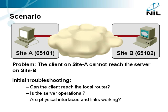The scenario we'll troubleshoot is well known to any networking engineer. A client on site A having AS number 65101 cannot reach the server on site B having BGP AS number 65102. We're assuming you already performed initial troubleshooting to verify that the client can reach the local router, that clients from some other site can reach the server so it's not a server problem, and that the LAN and WAN links connected to routers on both sites are working correctly.